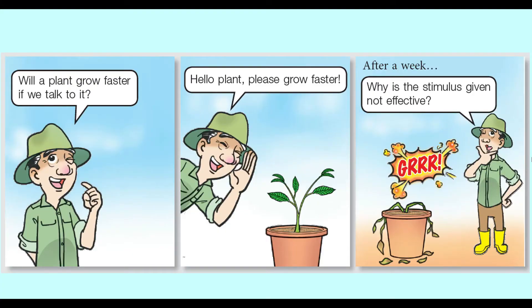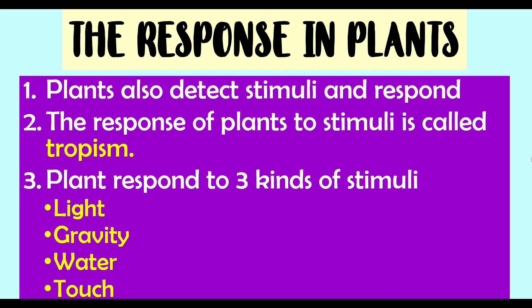Like humans and animals, plants can also detect stimuli and respond to them. However, their responses do not involve the movement of the whole body — only certain parts of the plants are involved. Generally, plants respond to stimuli; for example, talking to a plant asking it to grow faster would not be an effective stimulus.